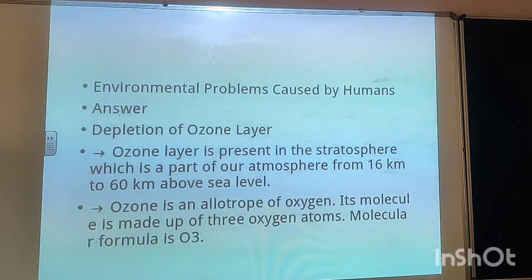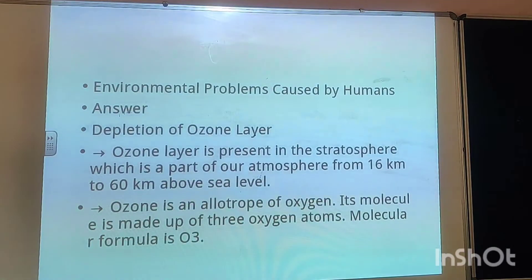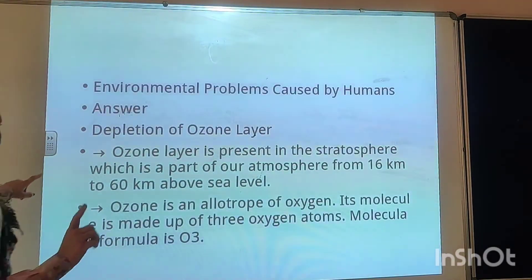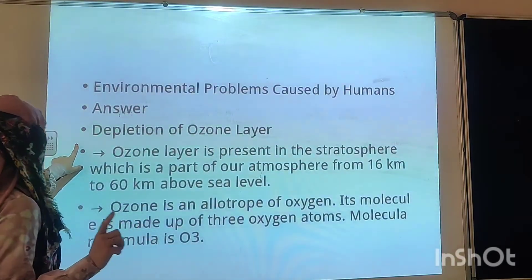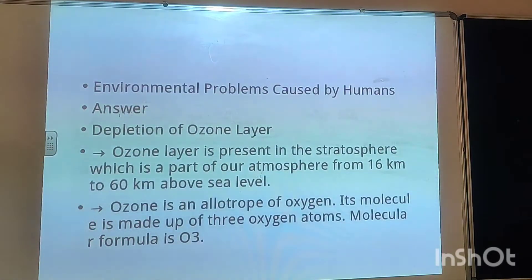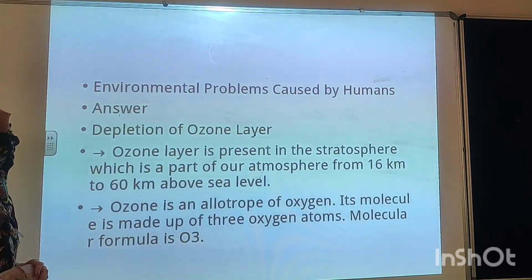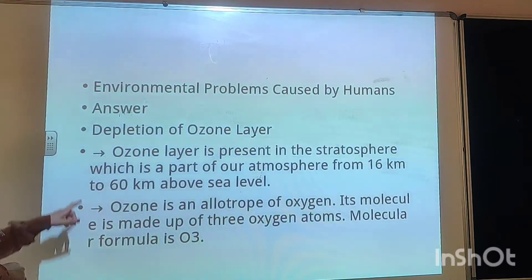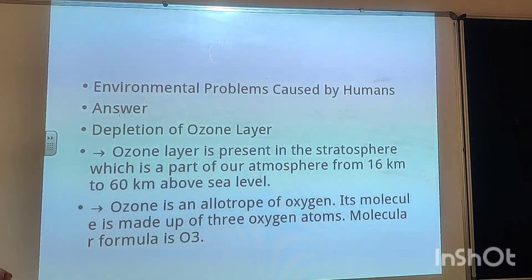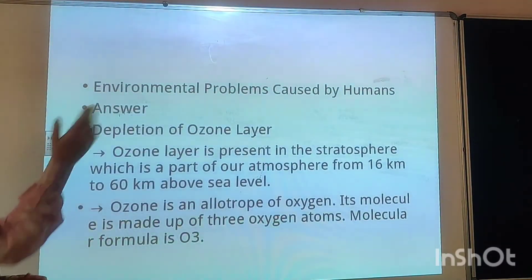What are the environmental problems caused by humans? The first and foremost is the depletion of the ozone layer. What is ozone and what is the ozone layer? The ozone layer is present in the stratosphere, which is a part of our atmosphere from 16 to 60 km above sea level.